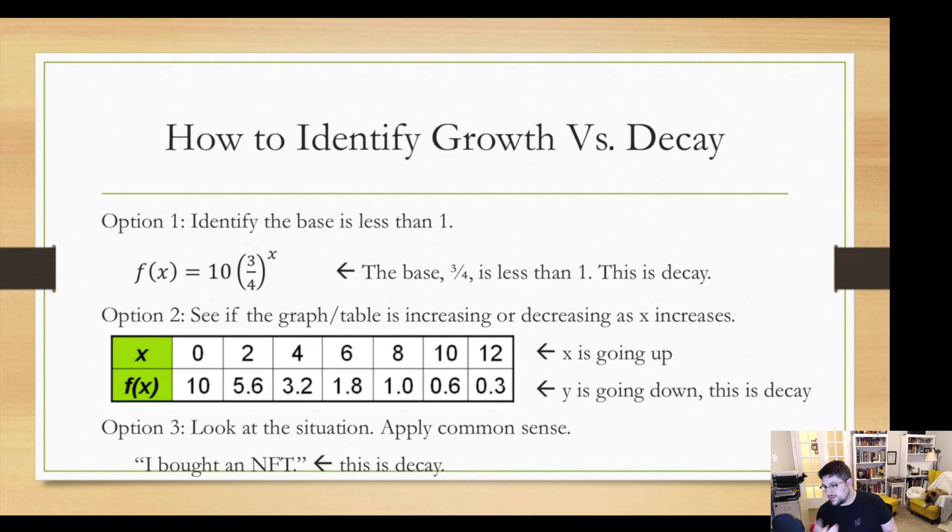Finally, situations. We're going to be talking later in this unit about applications of this stuff and how we use it quite a bit. And having a sense whether or not something is a growth or a decay based on the context clues helps. So if someone says I bought an NFT, you know it's going to be a decay function. Those aren't going anywhere. Well, they're going places, but not good places.